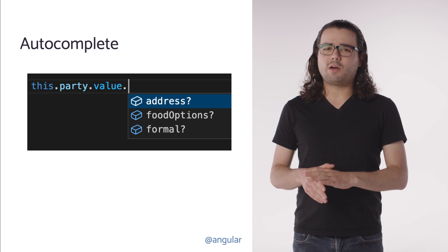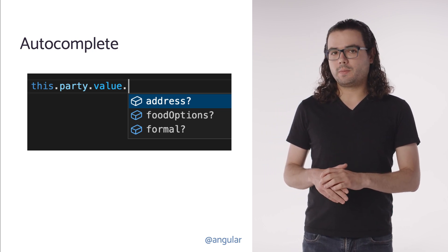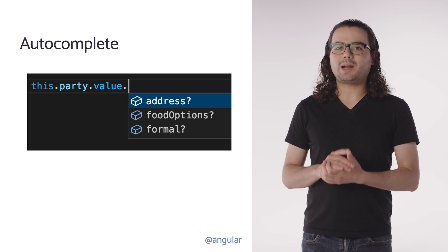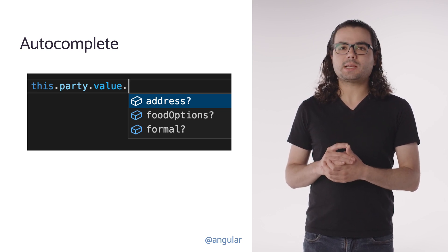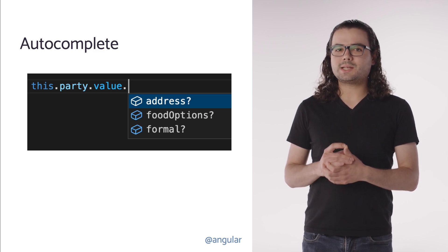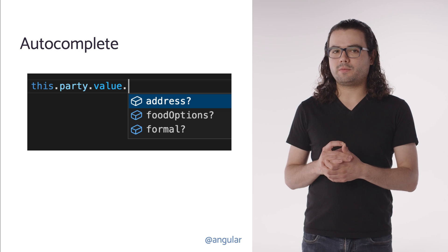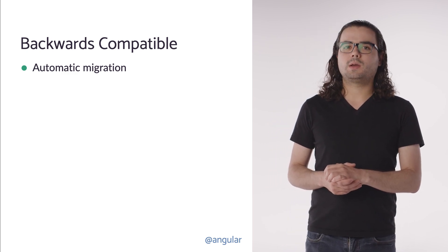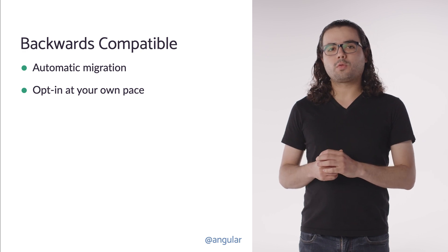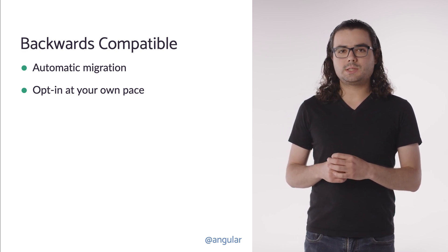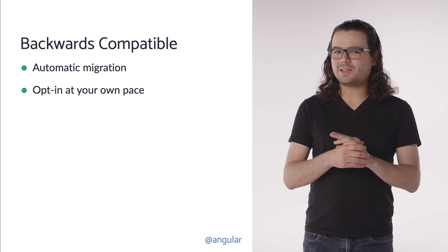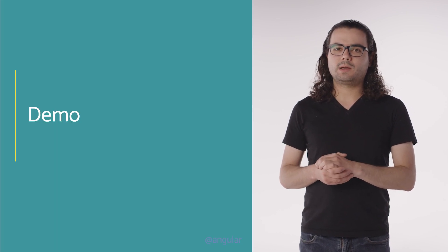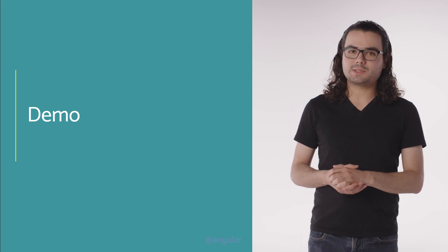The types also allow for robust auto-completion right in your editor. In the party form example, when accessing the form's value, the IDE suggests every known child of the form, helping you navigate even the most complex forms with confidence. Although this is a big change, it's 100% backwards compatible with all of your existing forms code. When you update to Angular 14, your forms will be automatically opted out of the new types. Then, when you're ready, you can turn them on one control at a time and incrementally migrate at your own pace.